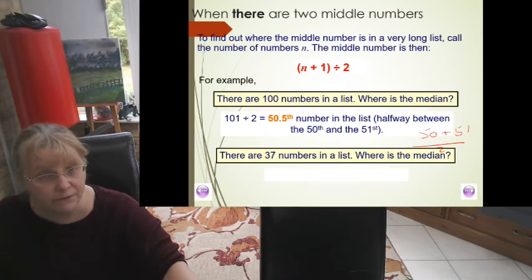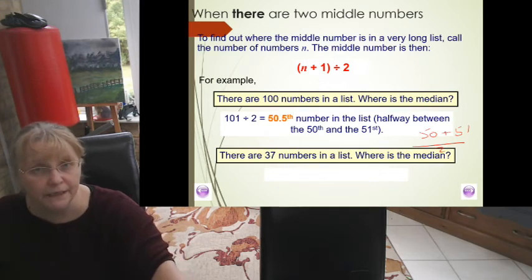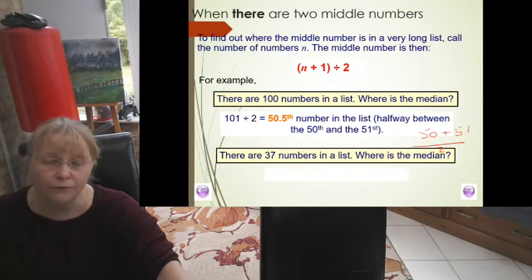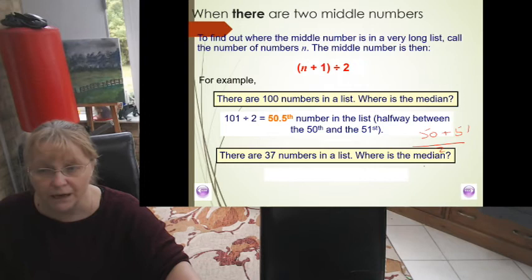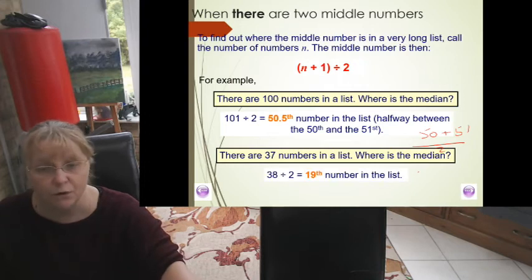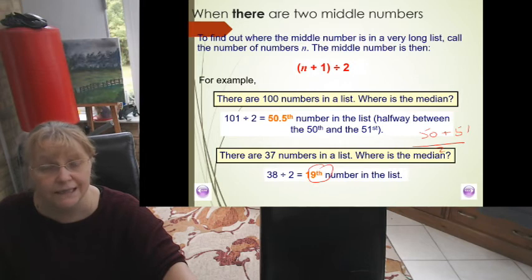Now when there's 37 numbers in the list, what would the median be? Remember what we said before: when there's an odd number, there would only be one number in the middle, so that would be 37 plus 1 divided by 2, so it would be the 19th number. This will make sense when we do it in a chart.